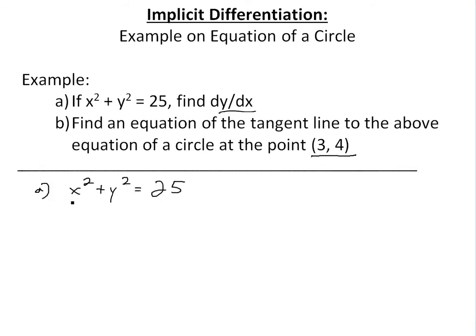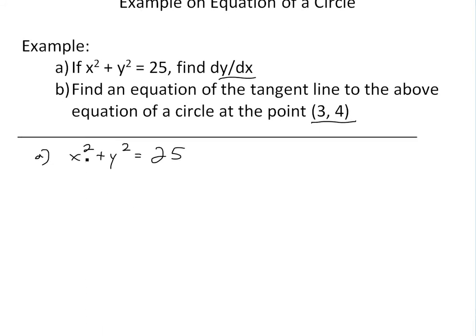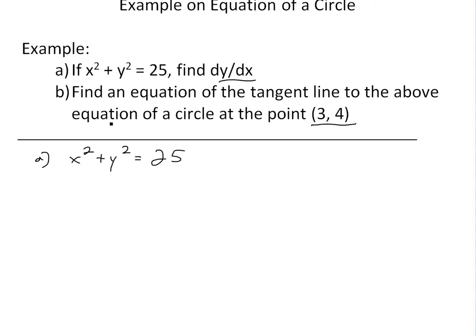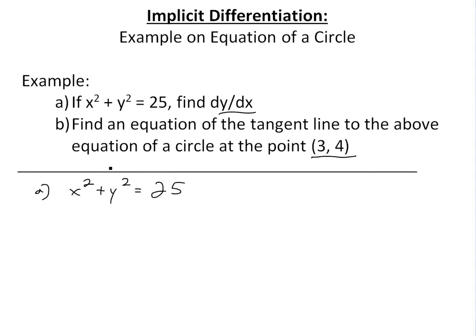Looking at Part A, this is an implicit function because y is not written explicitly in terms of x — as you can see, there are both x and y on one side and they're not separated, with y on one side and x on the other. There are actually two ways of solving this derivative.